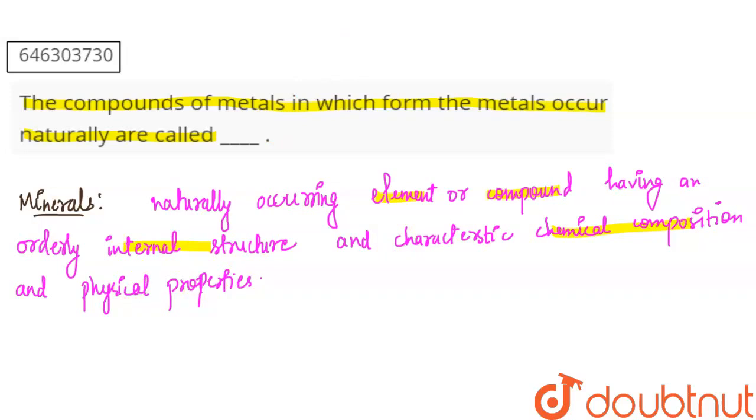So you have to ask, the compounds of metals in which form the metals occur naturally are called what? Because minerals are naturally occurring elements or compounds, you have to answer minerals.